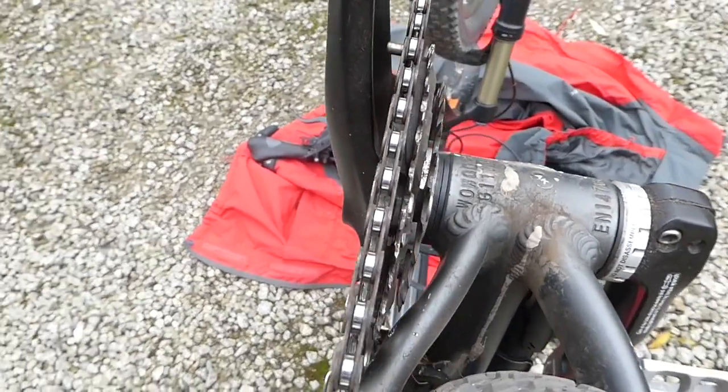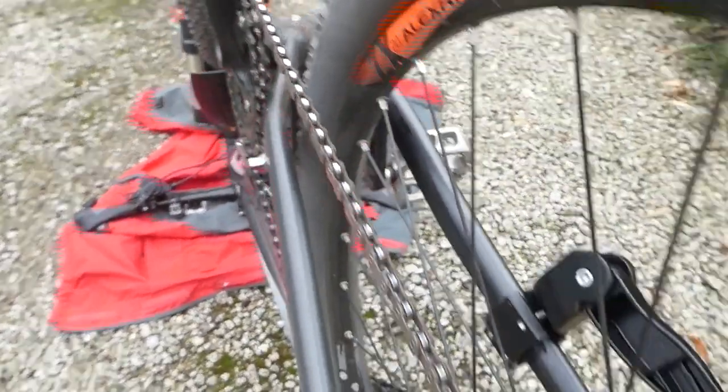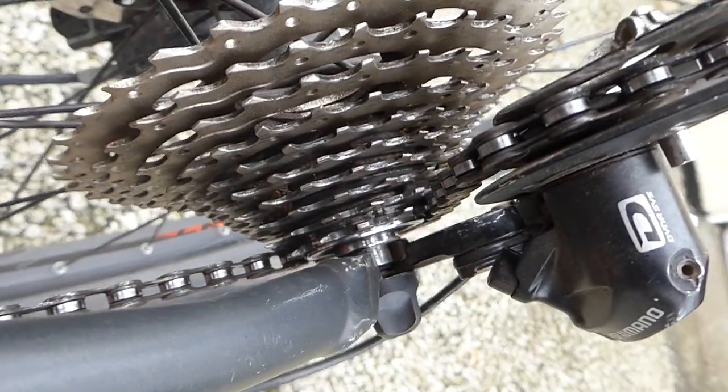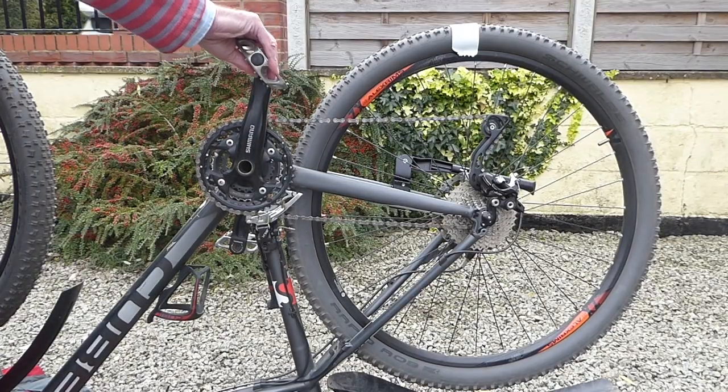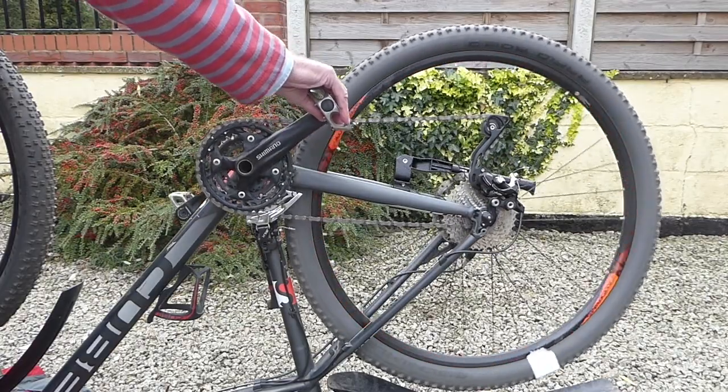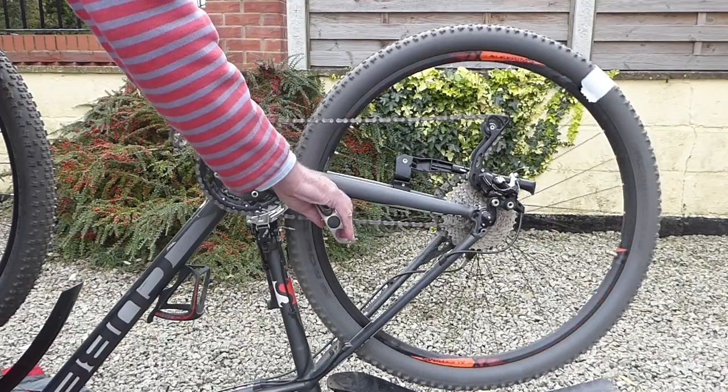If we swap those settings round so that the driver wheel on the pedal is large and the driven wheel on the back wheel is small then we get the opposite effect. One turn of the pedal rotates the wheel several times but as you know if you've cycled it also makes it very hard to push.